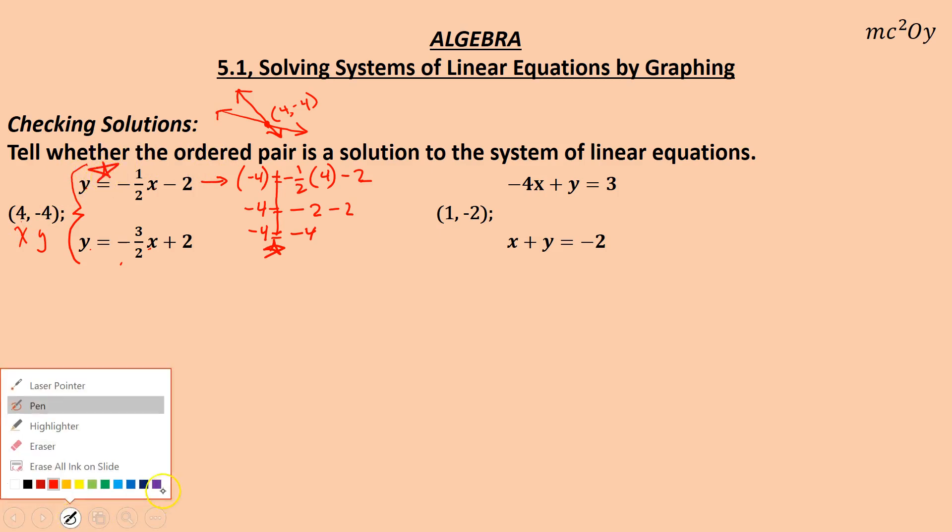That means the ordered pair for negative 4 is true for this equation. Let's go ahead and switch colors and try for the other equation. So let's go ahead and put in 4, or negative 4, excuse me, for y equals negative 3 over 2. I'll put in 4 for x. Plus 2. So negative 4 equals negative 3 times 4 is negative 12 divided by 2 is negative 6 plus 2. Let's see. Negative 6 plus 2 is negative 4. Negative 4 equals negative 4. That is true.